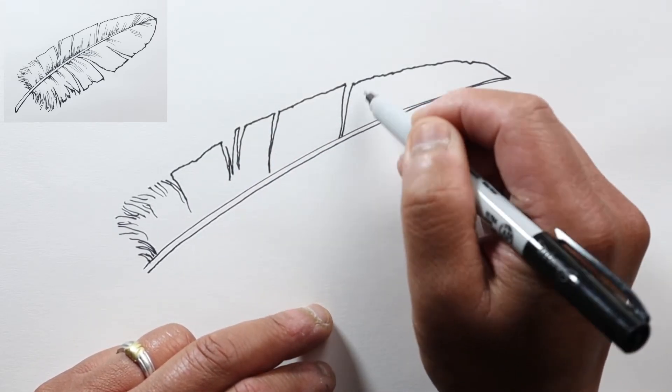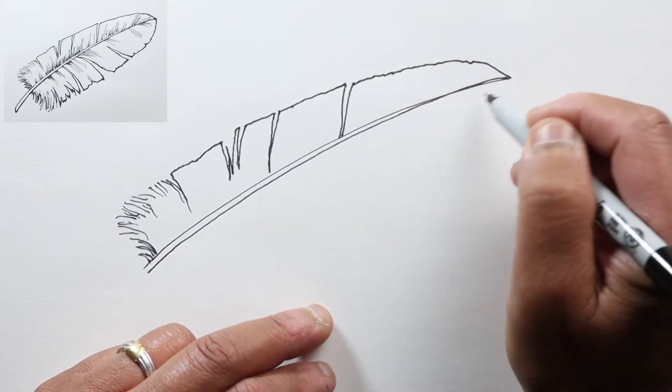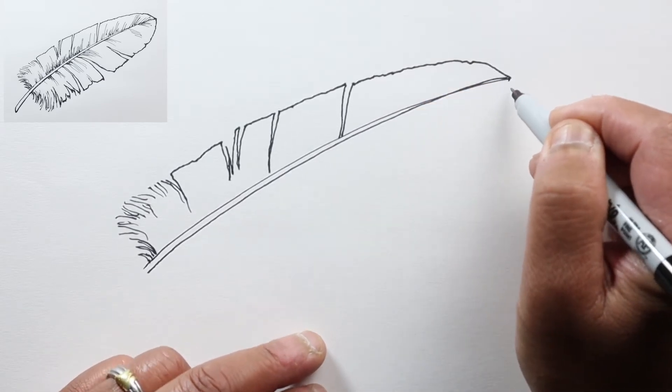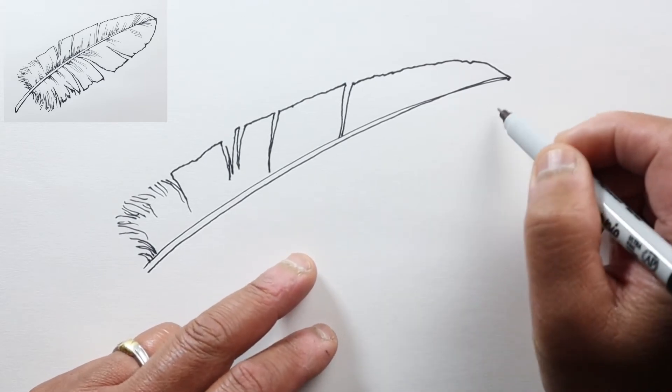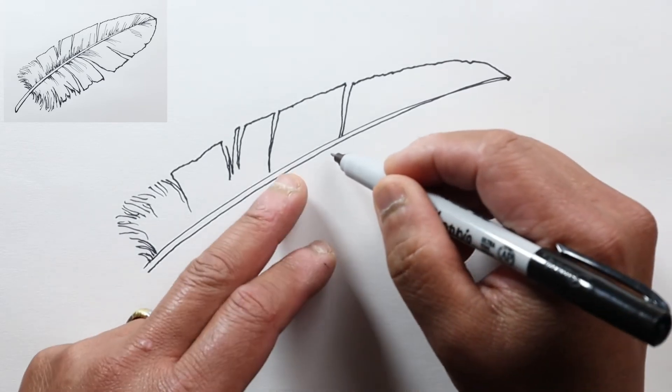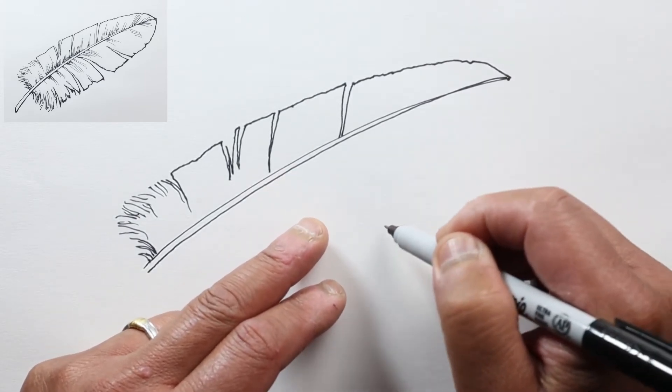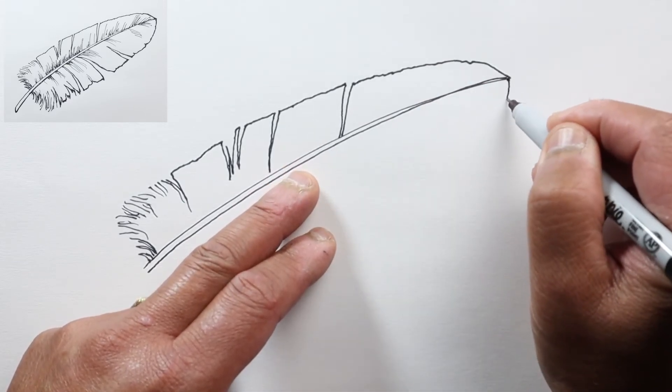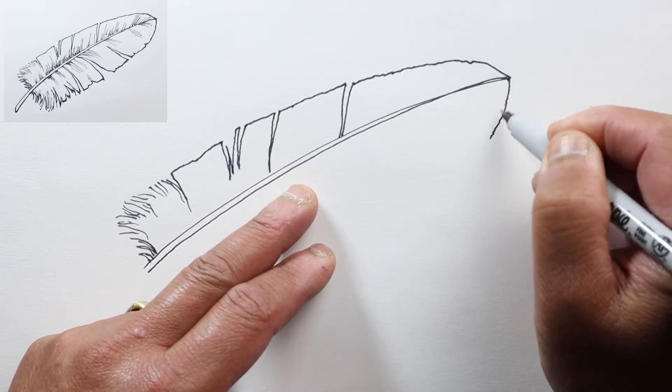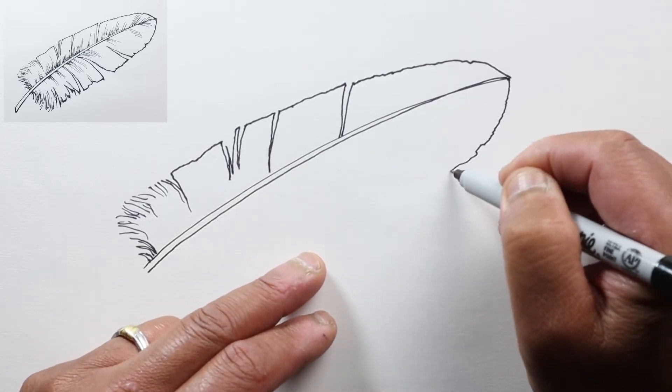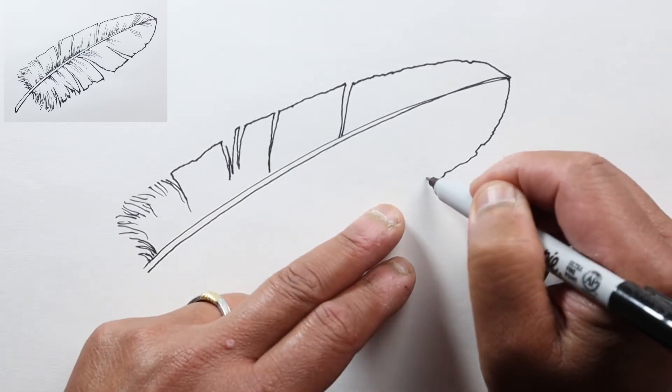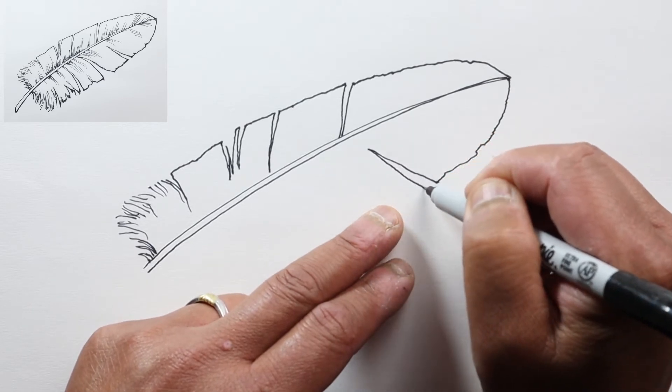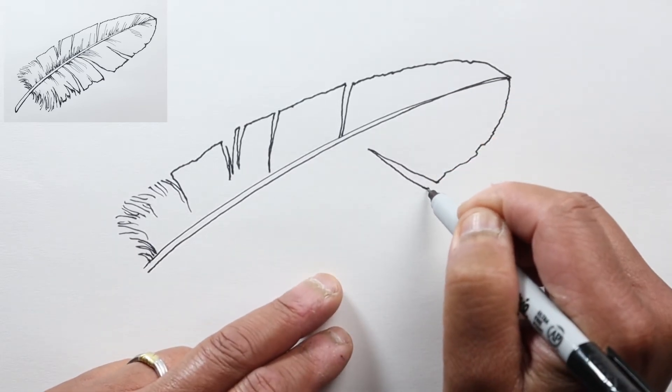This side will be closer to you, so we're going to have the outline a little bit further from the rachis. Let's go down again—somewhat undulating line. And then maybe here, let's draw a separation of the barbs.